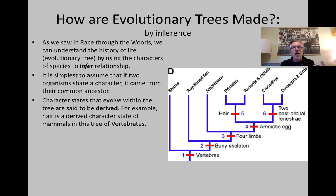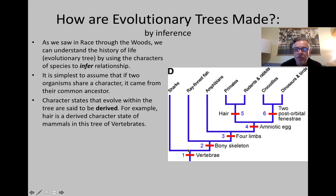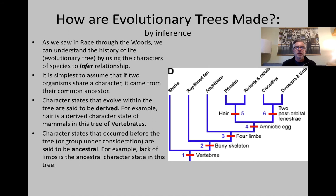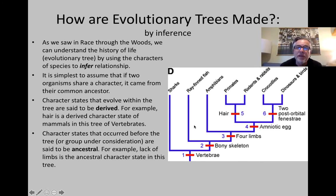Character states that evolved within the tree are said to be derived. For example, in this tree, hair is the derived character state of mammals, and you can see that right here because it evolved within this tree. No hair is the opposite of the derived trait, and that's called an ancestral trait — something that happened before the derived trait. Lack of limbs in this tree is ancestral because ray-finned fish and sharks lacked limbs. But everything after this point — the amphibians, primates, rodents, rabbits, crocodiles, dinosaurs, and birds — all have four limbs.